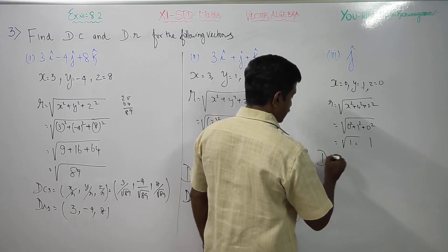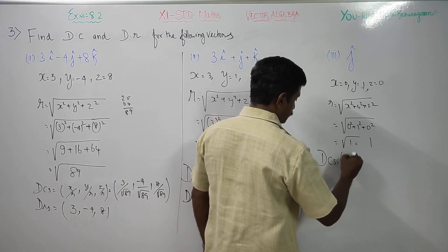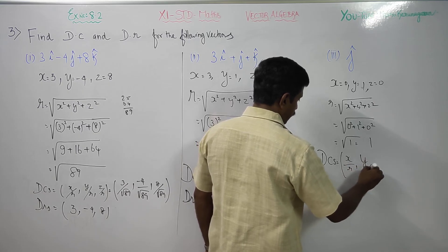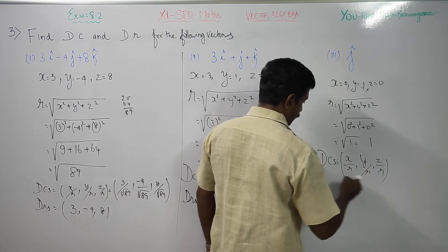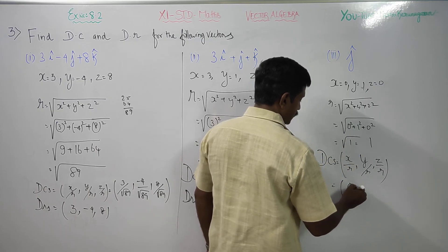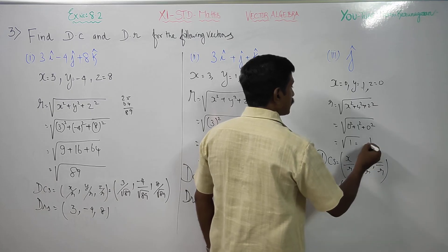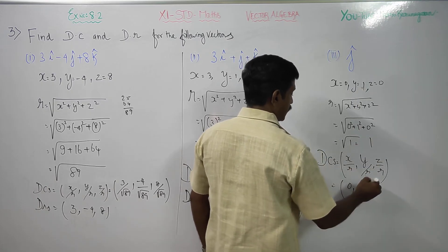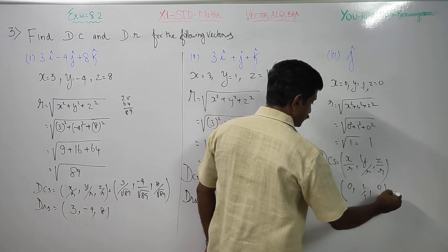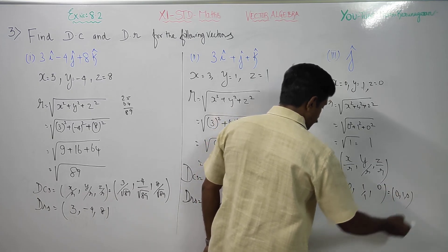My direction cosines formula is x by r, y by r, z by r. My x is 0. 0 by 1 becomes 0. Then 1 by 1. y is 1 and r is 1. 1 by 1. Then z is 0 by 1 becomes 0. Therefore my final answer will be 0, 1, comma, 0.